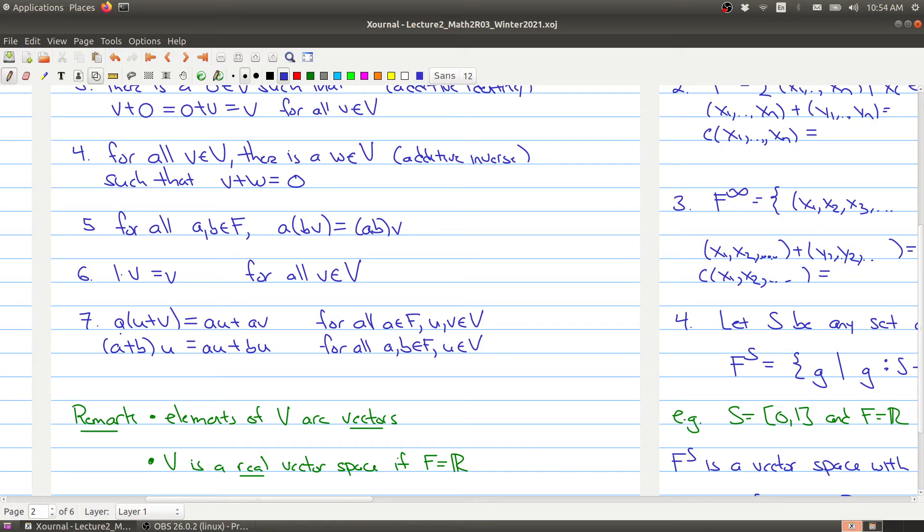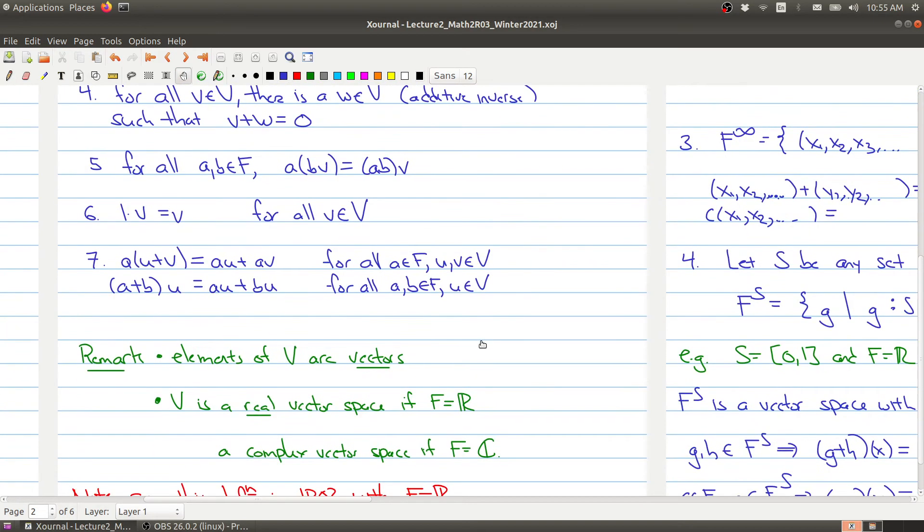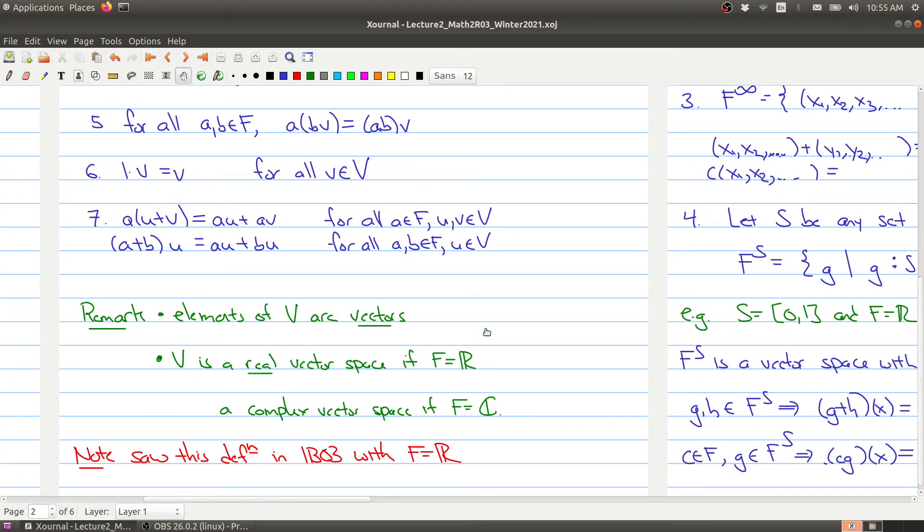Now as I was saying this definition, I slipped into this language already. The elements of V are called vectors—all the U's and V's up here were vectors. We say that V is a real vector space if the coefficients or the scalar multiplication is coming from R, and we say that V is a complex vector space if the constants are coming from the complex numbers. To tie this back to Math 1B03, you would have seen this definition where the scalars are all coming from R.